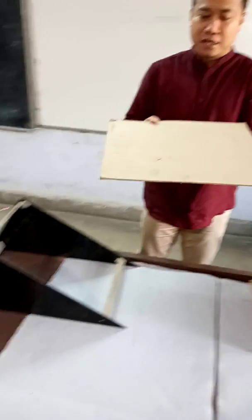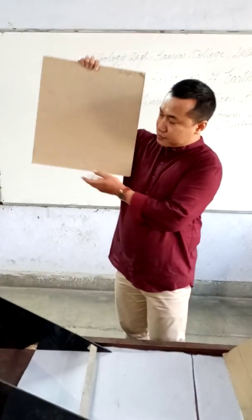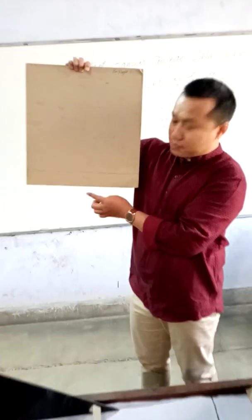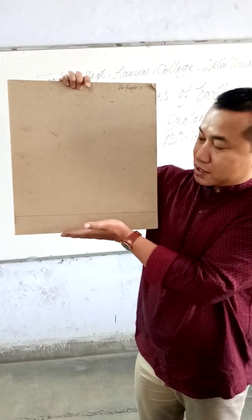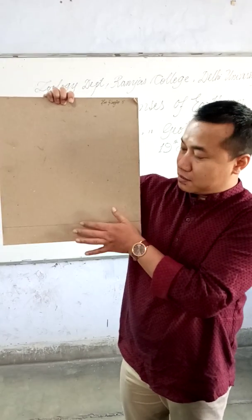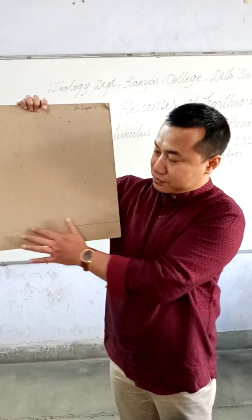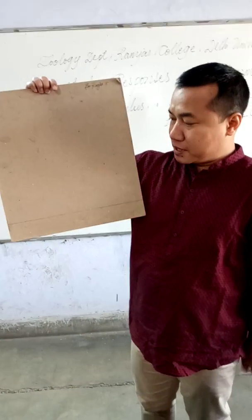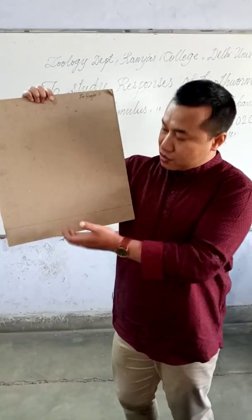First of all, we need a cardboard paper of 10 inch by 10 inch. This is the base, and just above it — five centimeters from the bottom — we draw a straight line. What we will do is release the earthworm and try to see how many of them cross this five centimeter mark. If an earthworm is moving above this line, we say that it is positively geotactic and the geotaxis movement is shown; if it is not, we will not count it.